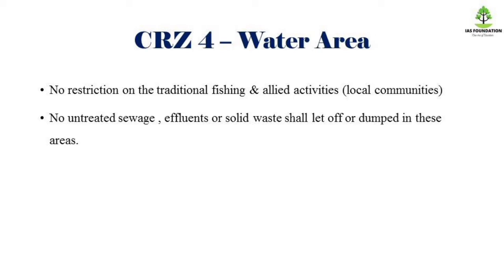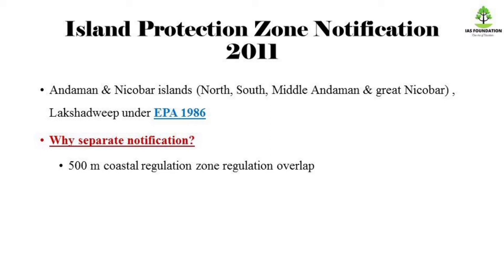The next one is the Island Protection Zone notification of 2011. If you have a Coastal Regulation Zone notification, it is sent to the coast. If you have a luxury island, you can regulate it. If you have a Coastal Regulation Zone, you can overlap — because of these islands we have to protect and regulate the Island Protection Zone. If you look at these islands, there are 4 islands: North, South, Middle, and Great — this is the Coastal Regulation Zone.